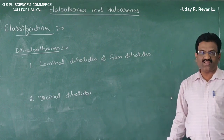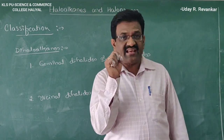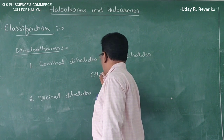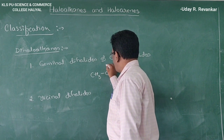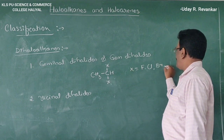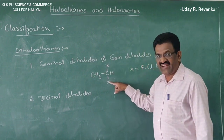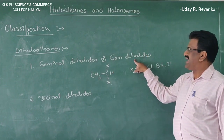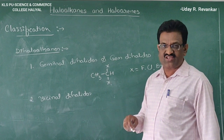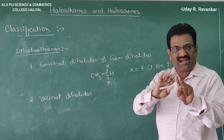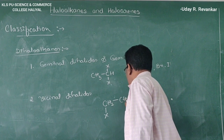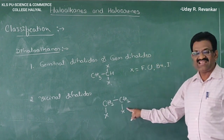Geminal dihalides are compounds in which two halogen atoms are attached to the same carbon atom — for example, CH₃CHX₂, where X stands for fluorine, chlorine, bromine, or iodine. Vicinal dihalides are those compounds in which halogen atoms are attached to adjacent carbon atoms, side by side — for example, CH₂X–CH₂X.